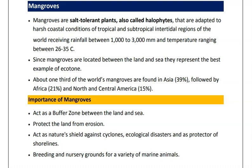One third of the world's mangroves are found in Asia, followed by Africa and then North and Central America. Moving to the significance of mangroves: mangroves act as a buffer zone between the land and sea. As they are present in the transition zone, they control the speed of sea waves and protect the land from erosion. They also act as a shield against cyclones.